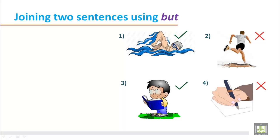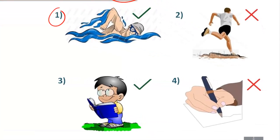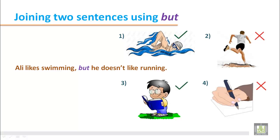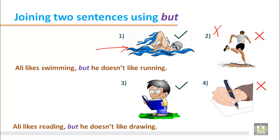Here are some activities where we describe pictures using 'but'. The first picture shows someone likes activity one but doesn't like activity two. For example: 'Ali likes swimming, but he doesn't like running.' For pictures three and four: 'Ali likes reading, but he doesn't like drawing.' Every time, we put a comma before 'but'.